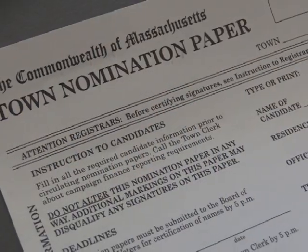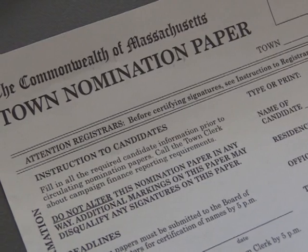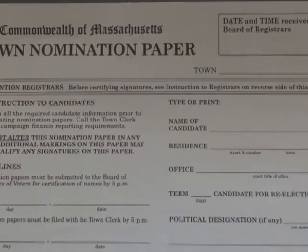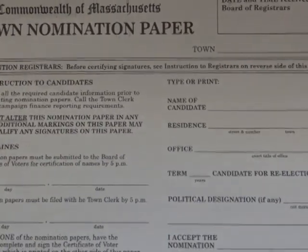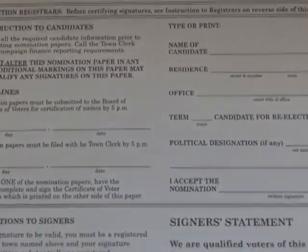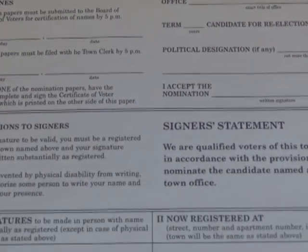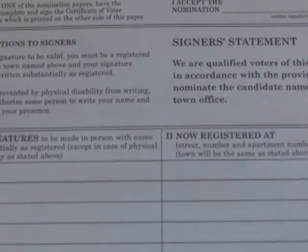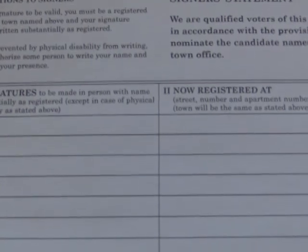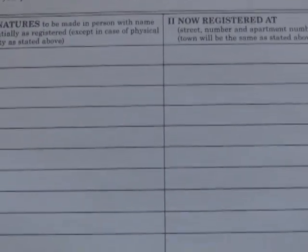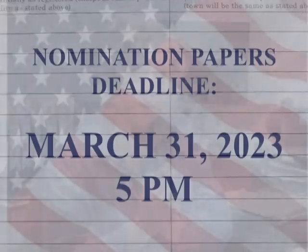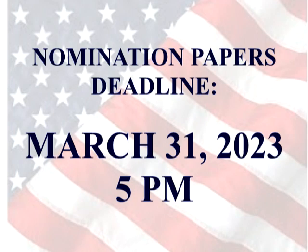If you are interested in taking out nomination papers, please call my office. 100 signatures are needed on your papers, so we'll give you enough papers to collect more than 100 signatures. You need 100 certified from our board of registrars. The last day to submit those papers is March 31st by 5 p.m. in this office — preferably before 5 p.m., but 5 p.m. is the deadline.